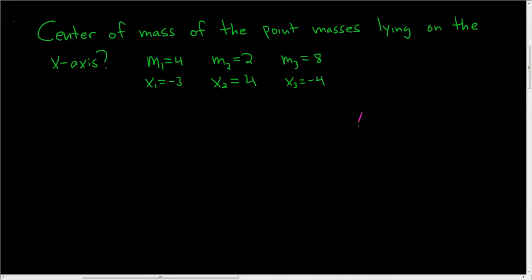Suppose you have a little seesaw, and we can call this little triangle the fulcrum. So maybe it looks something like that. Then we have these little dots — these are our little point masses.